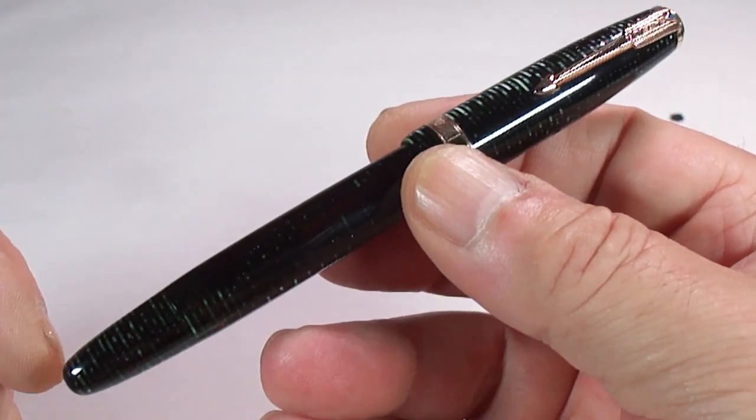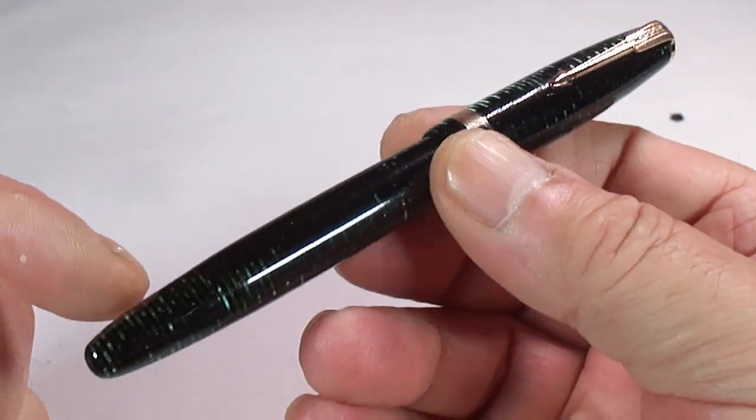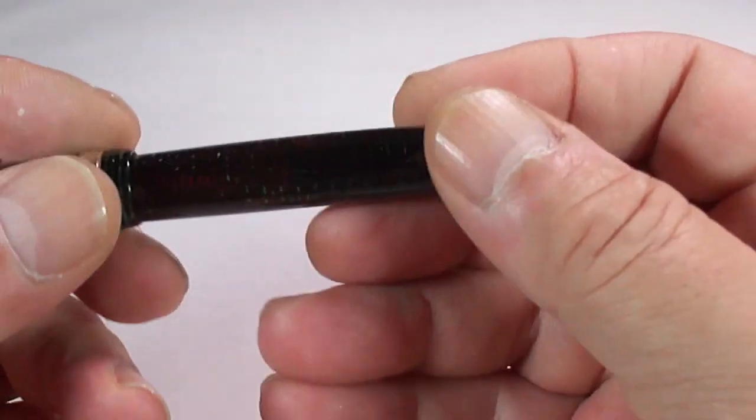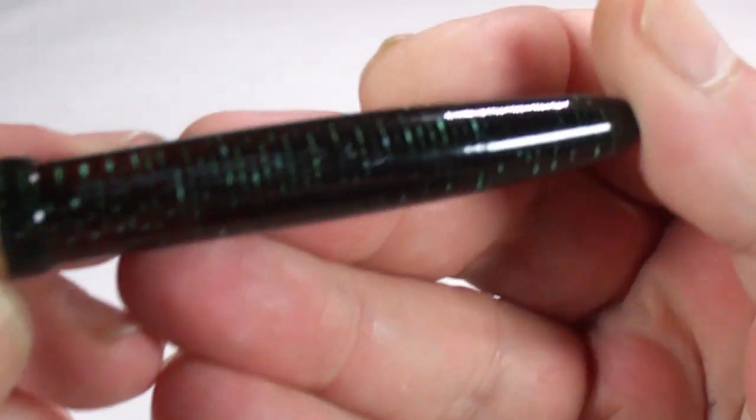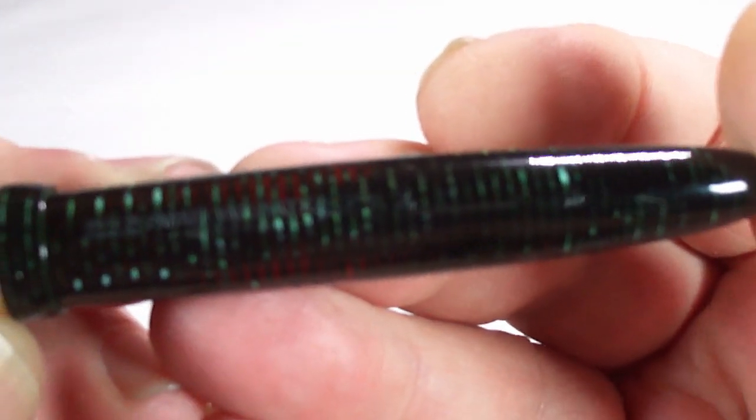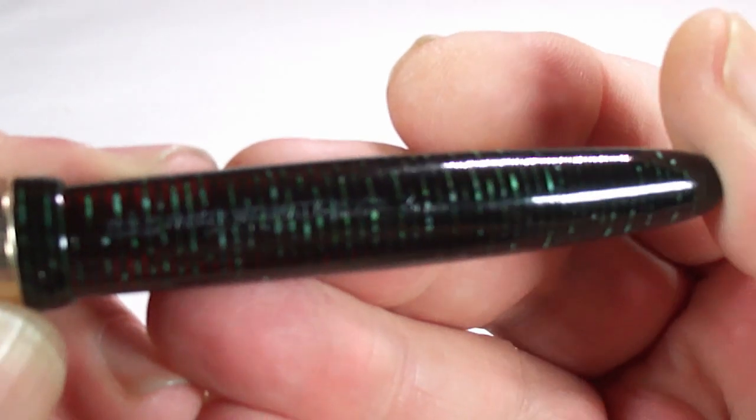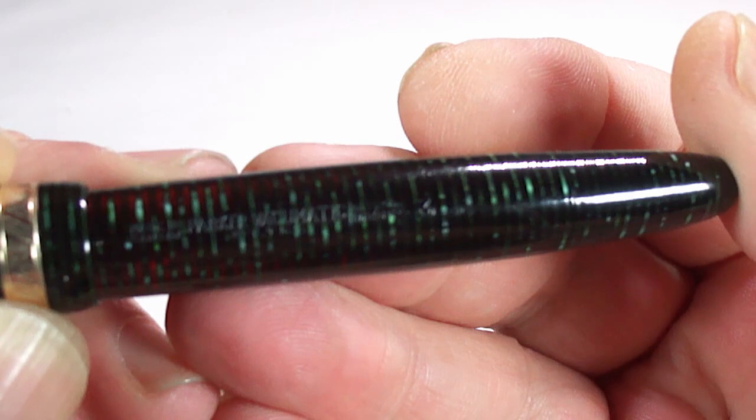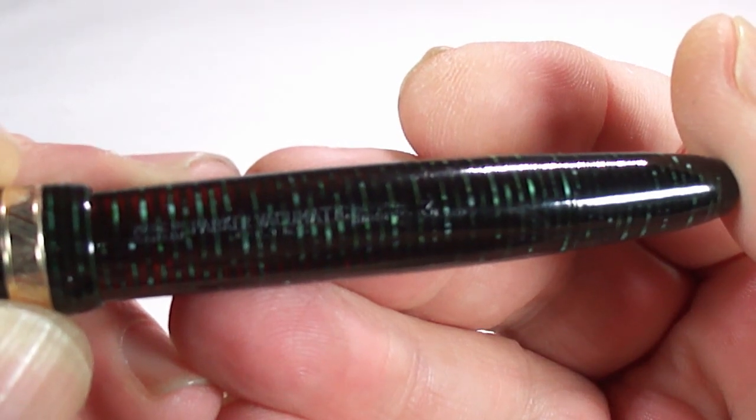Let me date the pen for you. If I show you the barrel imprint, let's keep it nice and still. The barrel imprint reads: to the left it says made in Canada, to the top Parker Vacumatic, underneath registered trademarks.